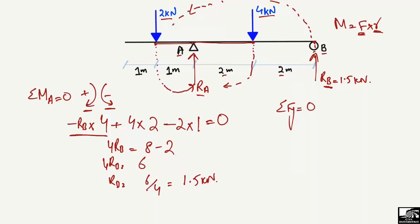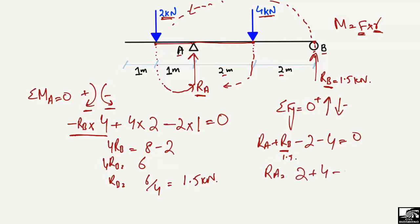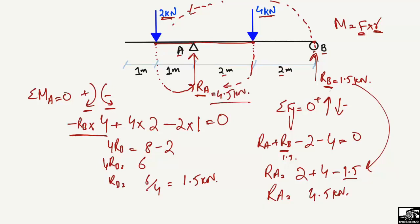The sum of all vertical forces equals zero. Upward forces are positive, downward forces are negative. Upward forces are RA and RB; downward forces are 2 kN and 4 kN. Substituting RB as 1.5 kN and shifting all terms, RA comes out to be 4.5 kilonewtons.